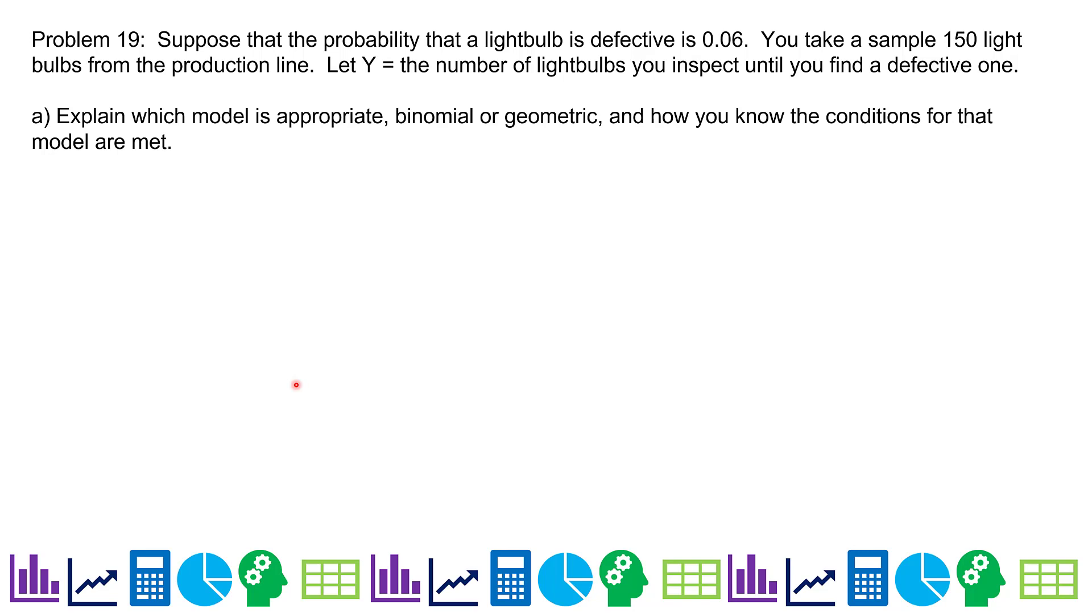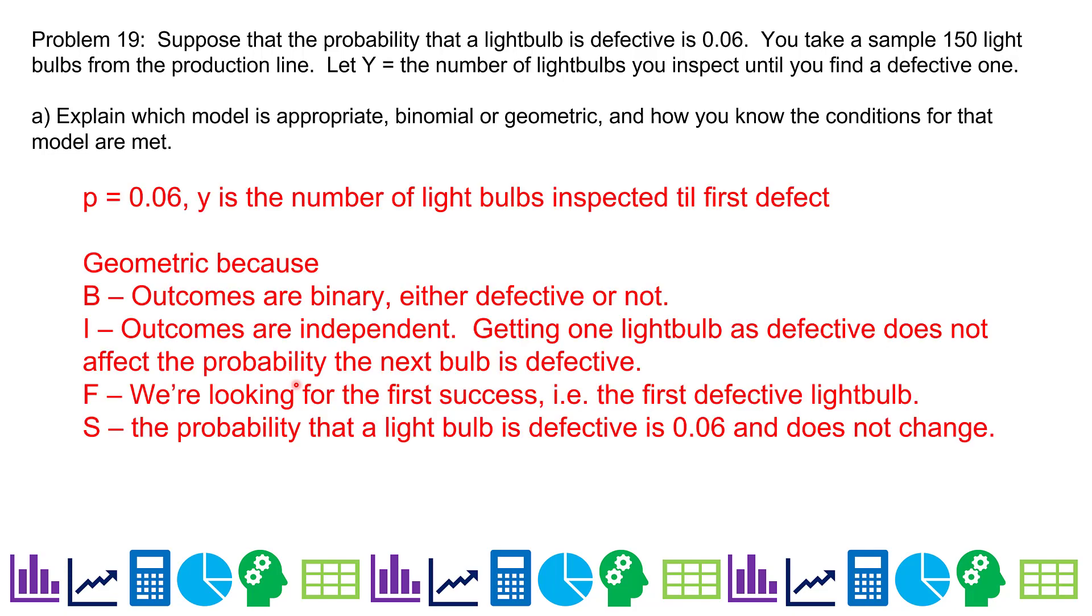Suppose that the probability that the light bulb is defective is still 0.06. You can take a sample of 150 light bulbs from the production line, but find the number of light bulbs you expect until you find a defective one. So we're talking about a slightly different scenario here. I'm not trying to count how many are defective. I'm counting how many light bulbs do I inspect until I find the first defective one. So which model is this? Hopefully you know, it's geometric. So P is 0.06. Y is the number of light bulbs inspected until first defect. It's geometric. Our outcomes are still binary. Our outcomes are still independent, but now we're looking for first success, not the number of defective light bulbs.